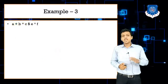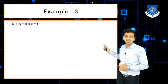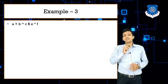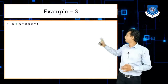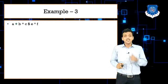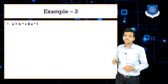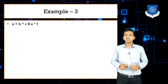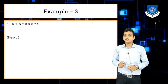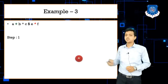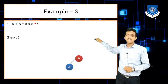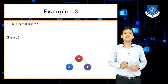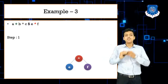Example three: a + b * c $ e ^ f. From this expression, since dollar and caret are exponential operators, we go from right to left. So we solve caret first: caret becomes the root, e is the left child, f is the right child.